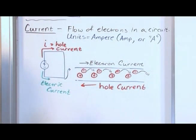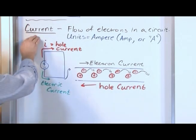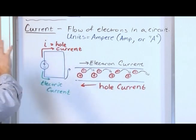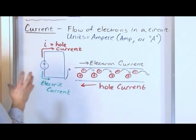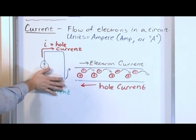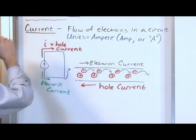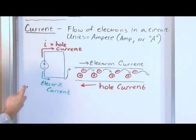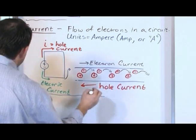All right. So, to sum it up, which is really so important, I keep talking about it. Current, in general, in real life is the flow of electrons. However, in all circuits from henceforth that we're going to talk about, we're not even going to talk about this. We're just going to say the current comes out of the positive terminal and the unit is ampere. That's really the bottom line.